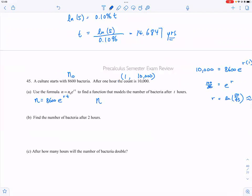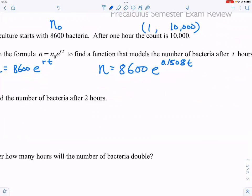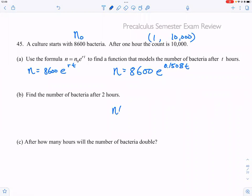So with the model, it's going to be n equals 8600 times e to the 0.1508 t. That's the model, and then you can use it to find the following answers. So 8600 e to the 0.1508 times 2, you can just put into your calculator 8600 times e to the 0.1508 times 2, which gets you 11,627.